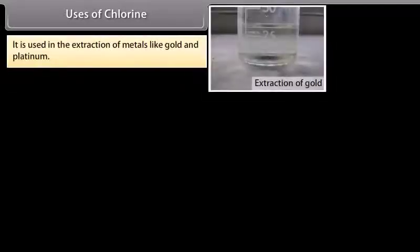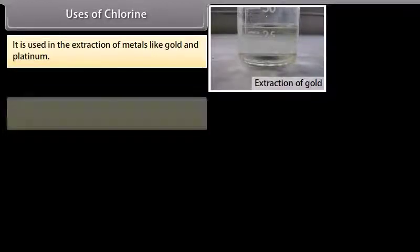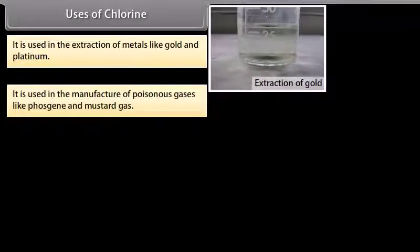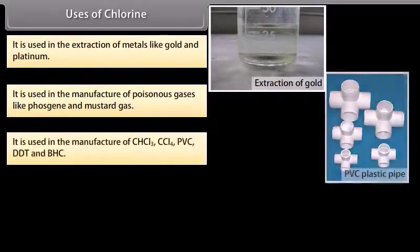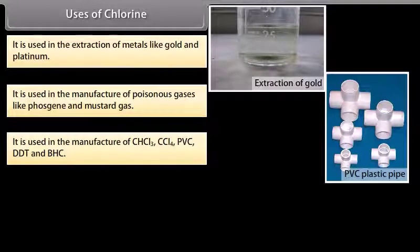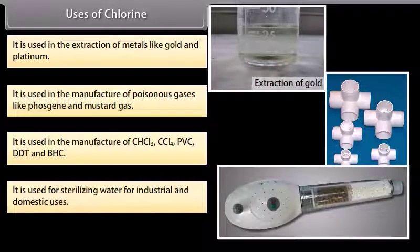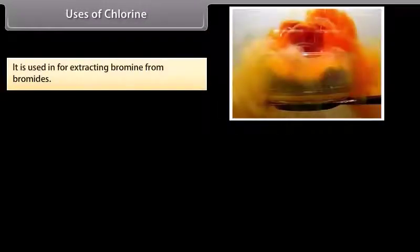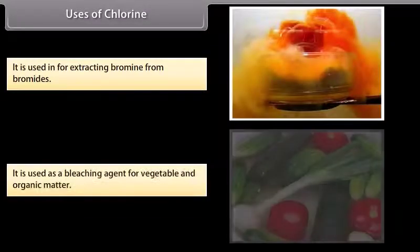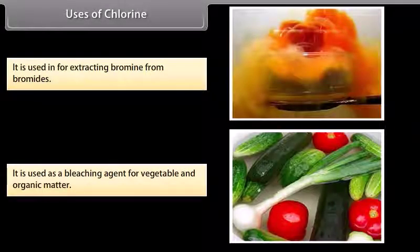Uses of chlorine: It is used in the extraction of metals like gold and platinum, in the manufacture of poisonous gases like phosgene and mustard gas, and in the manufacture of CHCl₃, CCl₄, PVC, DDT and BHC. It is used for sterilizing water for industrial and domestic uses, for extracting bromine from bromides, and as a bleaching agent for vegetable and organic matter.